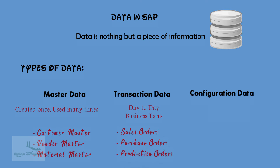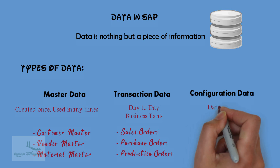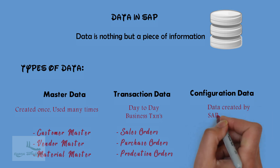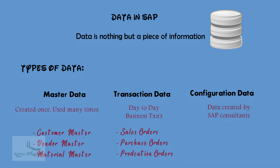Configuration data is one of the important things. Configuration data deals with the customization or the code changes that will be created by the SAP consultants during the system implementation. All the configurations will be saved under the package called transport request in SAP. So guys, this was about the different types of data in SAP.